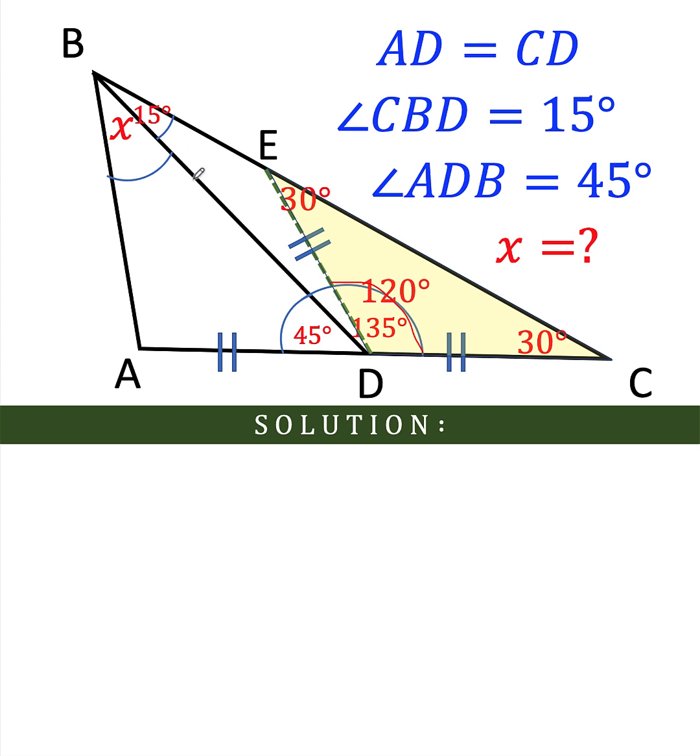Now we know that angle BDC is 135, this bigger angle here. And this smaller angle here, angle EDC, is 120 degrees, which means that this small angle here must be 135 minus 120 or 15 degrees.